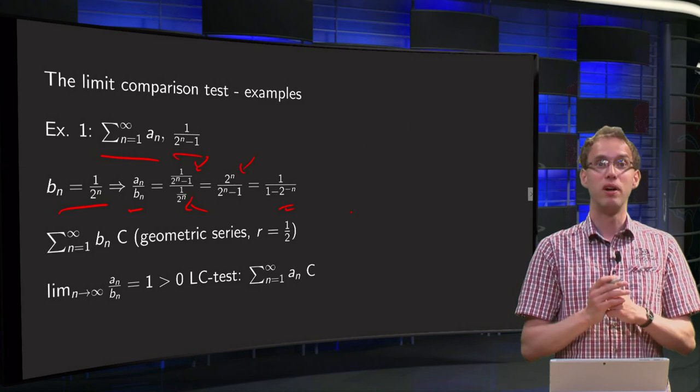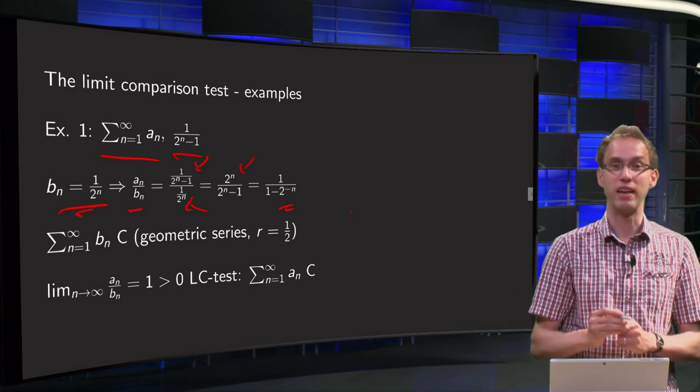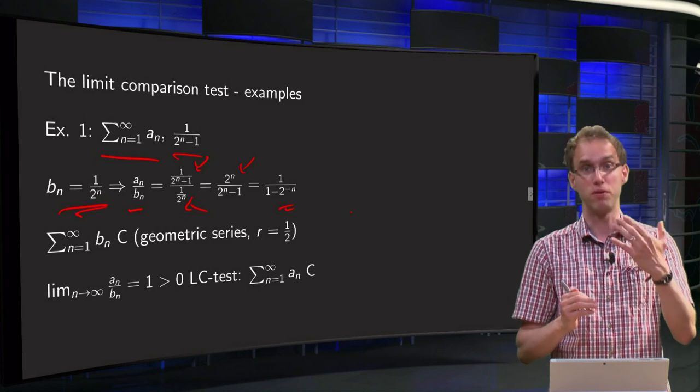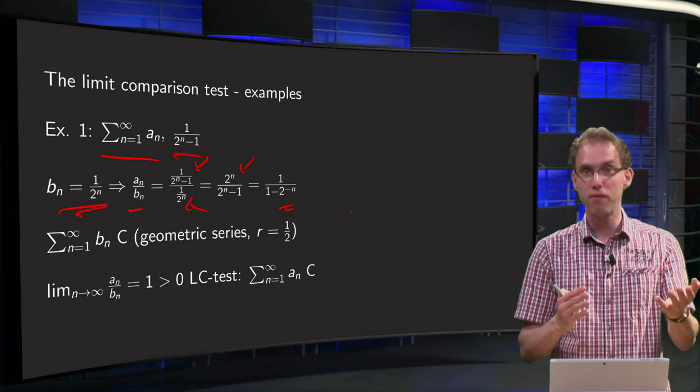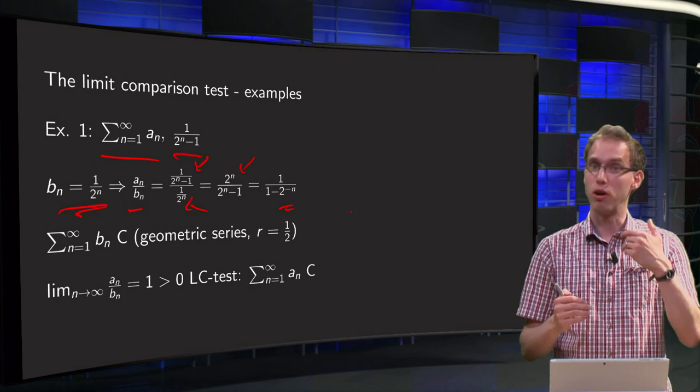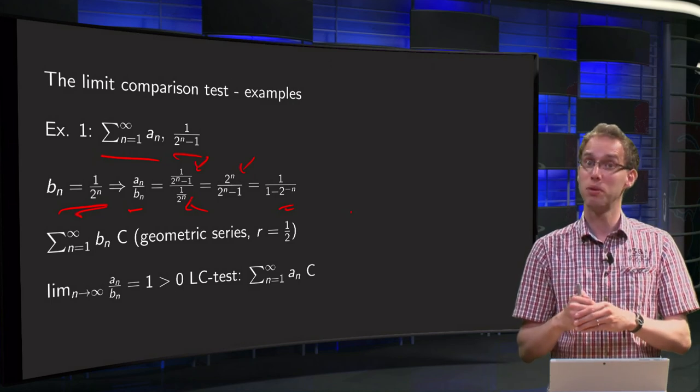Now we know that the sum of the bn, of the 1 over 2 to the power n, is convergent. It is 1 half plus 1 quarter plus 1 over 8 plus 1 over 16, so you know either graphically that the sum equals 1, or use the fact that it is a geometric series.